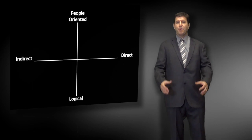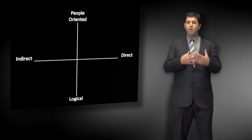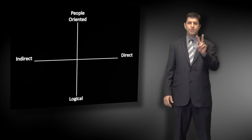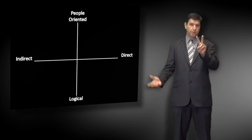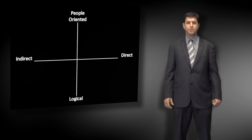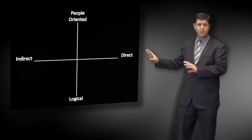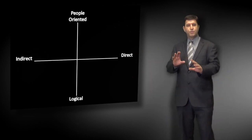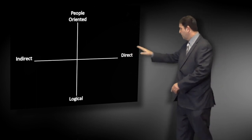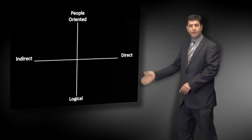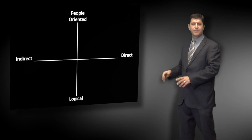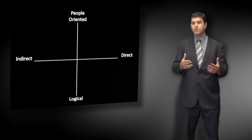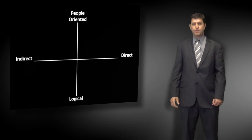There are basically two specific questions you need to ask yourself and those other people in order to determine what your own strengths and weaknesses are, and what the people around you are like. The chart you're going to see on screen has two lines — a horizontal line and a vertical line going up.